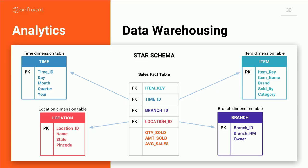The final area is analytics — and this is an area that's actually been built around events for a long time. One of the fundamental tenets of data warehousing is how you define your data. The first thing you'd do setting up a data warehouse is build out a star schema representation. Right at the center of that star is something called a fact table. And what's a fact? It turns out a fact is an immutable record of what happened with a timestamp — which is basically exactly the definition of an event. So a data warehouse is actually built around an event stream.